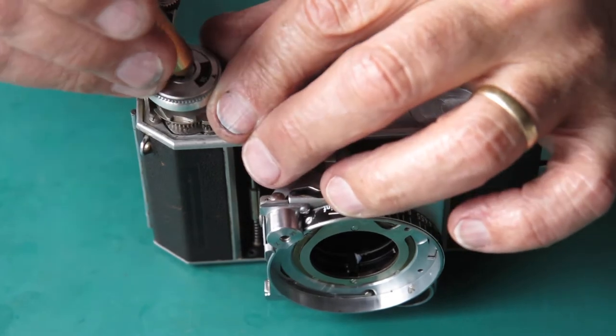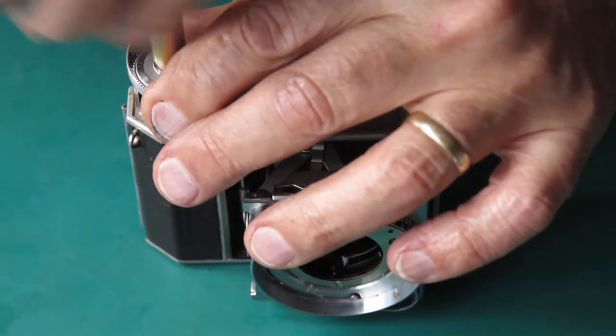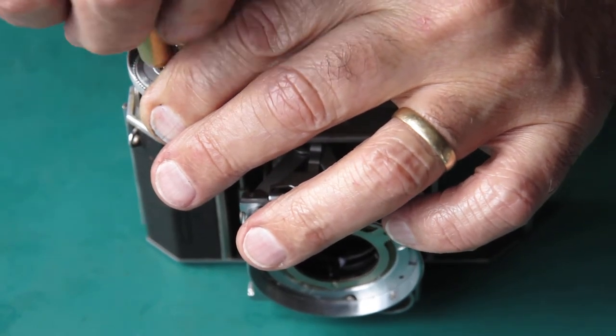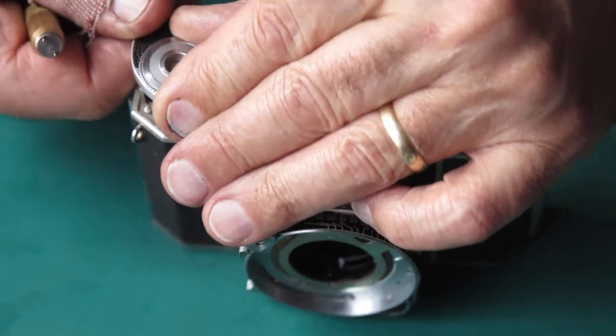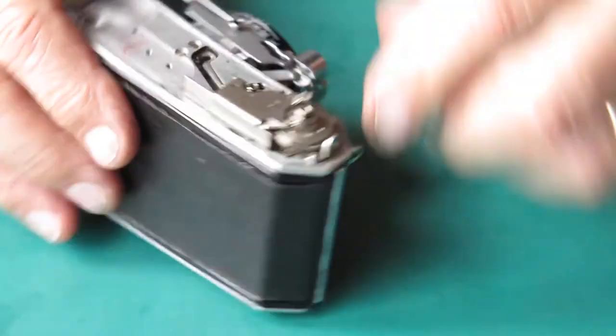Once that problem arises, it tends to get worse. Because things don't want to move. And the more people push on them to make them move, the more twisted stuff gets.